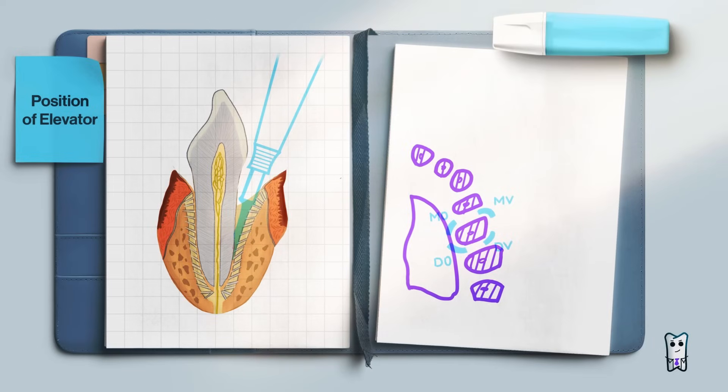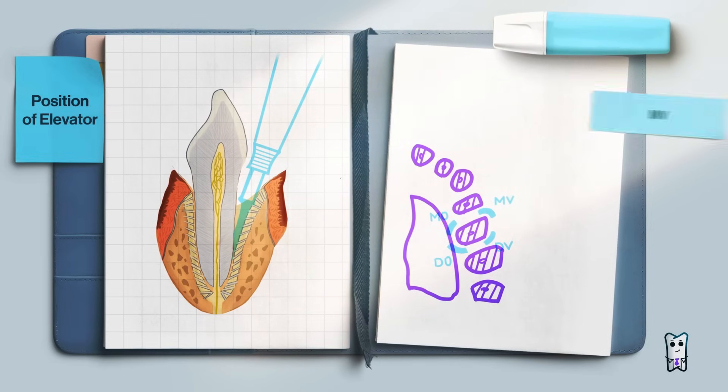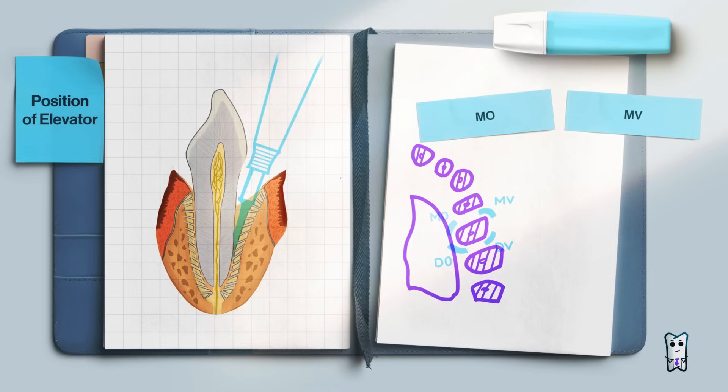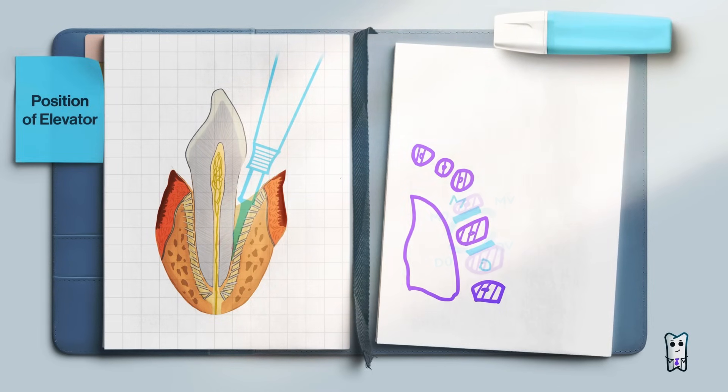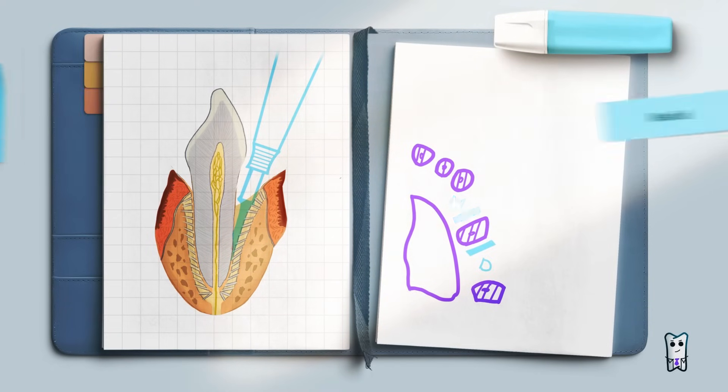If the adjacent teeth are present, the elevator should be placed in the linear angles of the tooth or medio-vestibularly, medio-orally, disto-vestibularly, disto-orally. If the adjacent teeth are missing, the elevator can be placed directly medial or distal to the tooth.